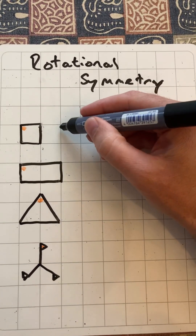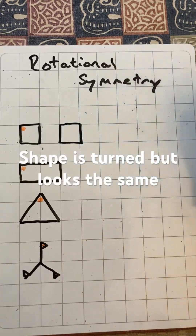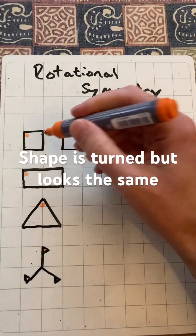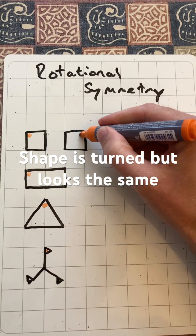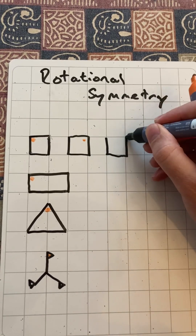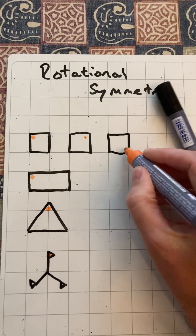So imagine the square — I can turn it, and if I'd colored that top left-hand corner, it would now move there. How many times can I turn it and it still looks exactly the same?